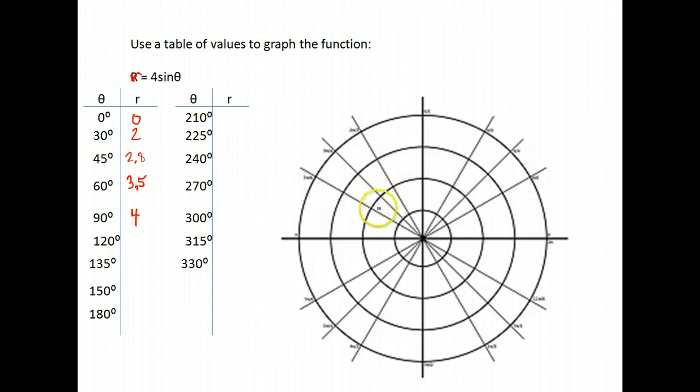Now remember sine values repeat in the second quadrant. They're the same positive values. So when I do the sine of 120, you're going to notice that I get 0.87 again times 4 is 3.5 again.